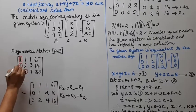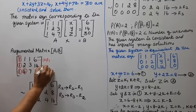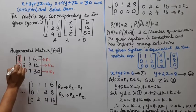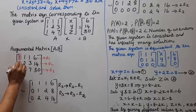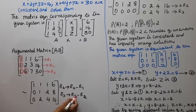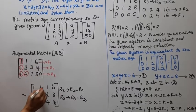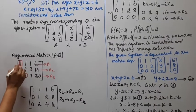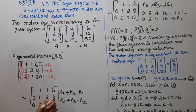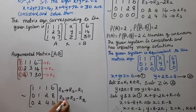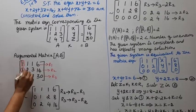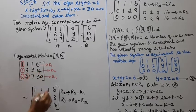This is R1, this is R2, this is R3. We apply the row operations R2 tends to R2 minus R1, and R3 tends to R3 minus R2. R1 remains [1, 1, 1 | 6]. For R2: 1 minus 1 = 0, 2 minus 1 = 1, 3 minus 1 = 2, 14 minus 6 = 8. For R3: 1 minus 1 = 0, 4 minus 2 = 2, 7 minus 3 = 4, 30 minus 14 = 16.